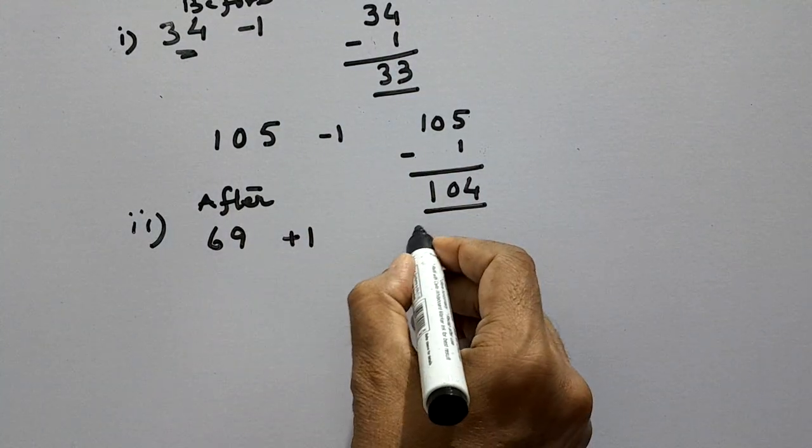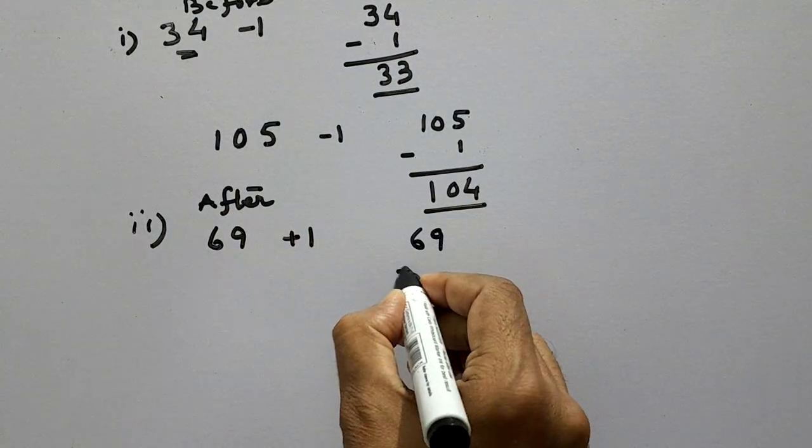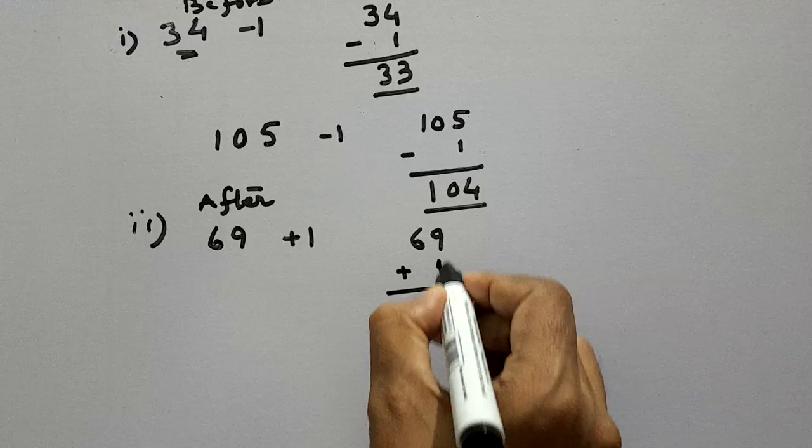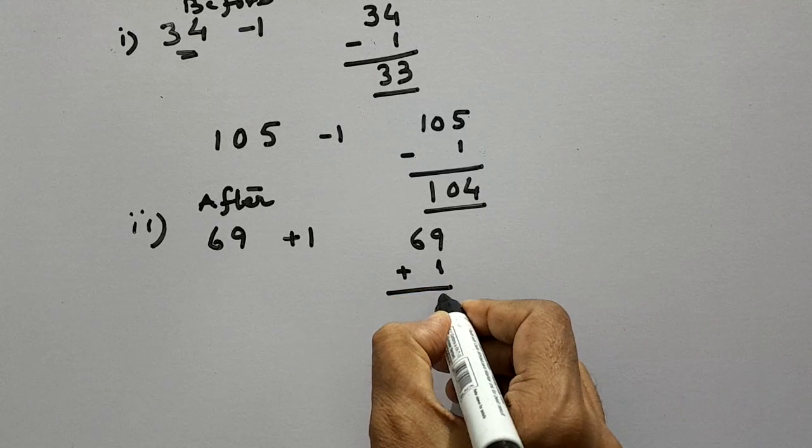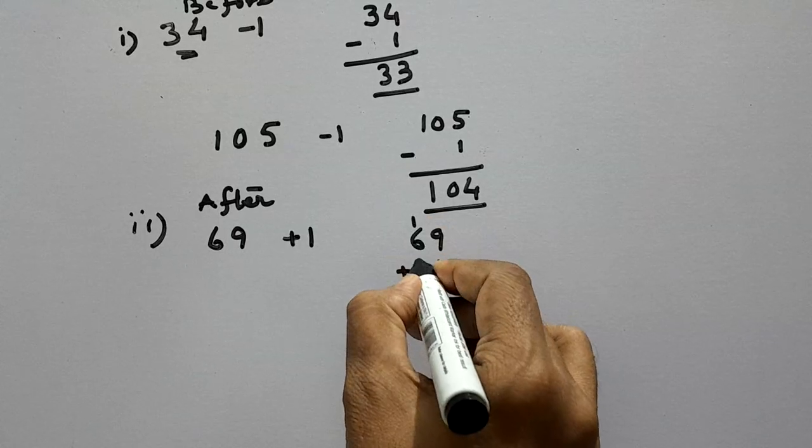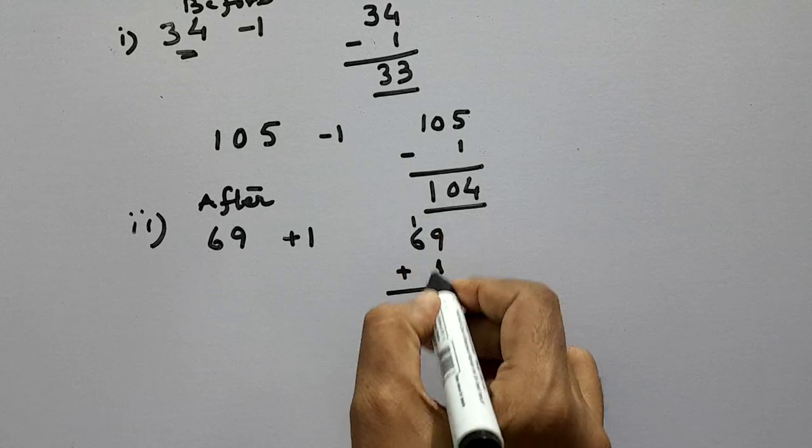So here 69 plus 1. 9 ones plus 1 one is 10 ones, so we will put 0 here and carry 1 to the tens place. So 6 plus 1 is 7.